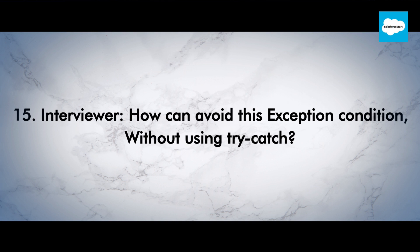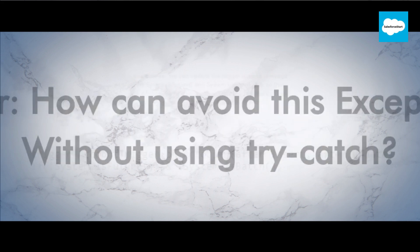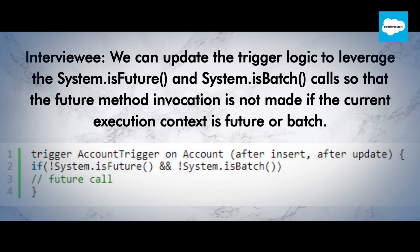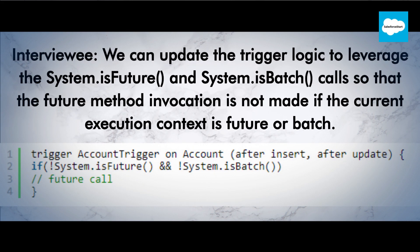Interviewer: How can we avoid this exception condition without using try-catch? Interviewee: We can update the trigger logic to leverage System.isFuture() and System.isBatch() calls so that the future method invocation is not made if the current execution context is future or batch.